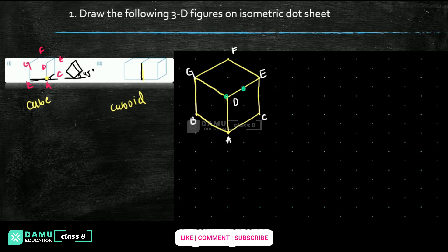Here one point is there, here one point — isometry points. This figure is like one rotation, one side. But this one is making here angles. Like that we need to draw. This face is somewhat tilted and we draw it there — like that we need to draw.